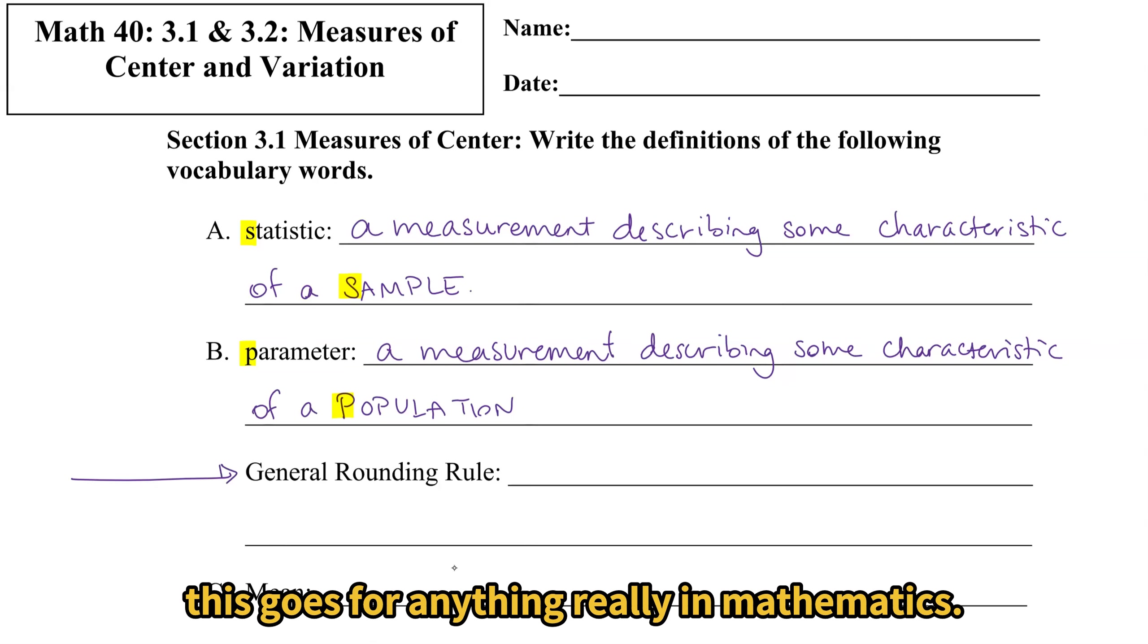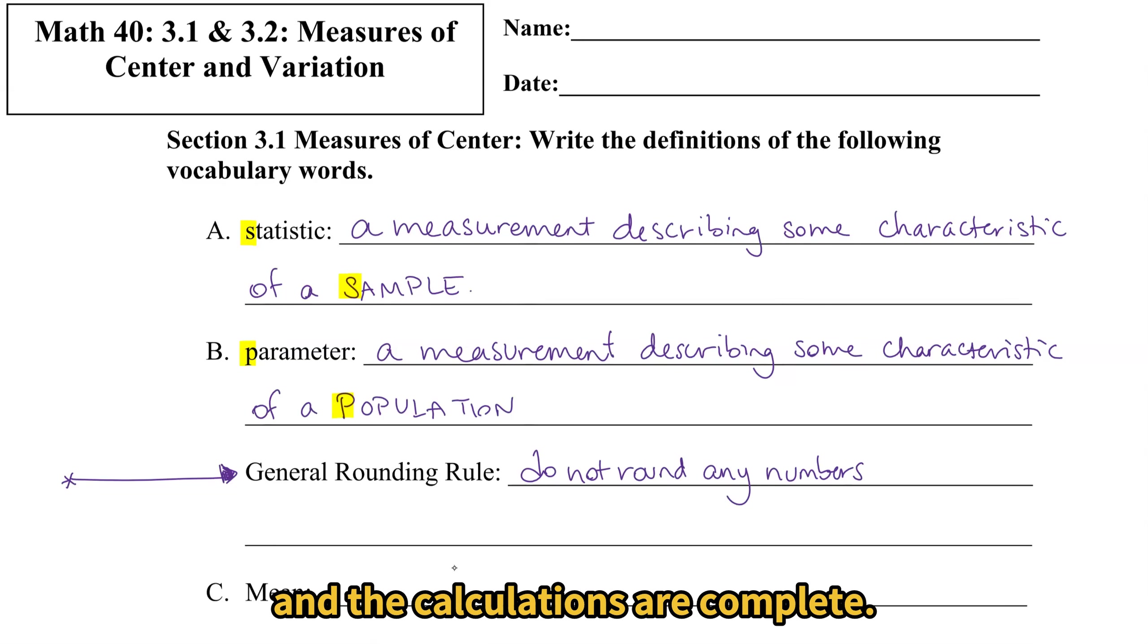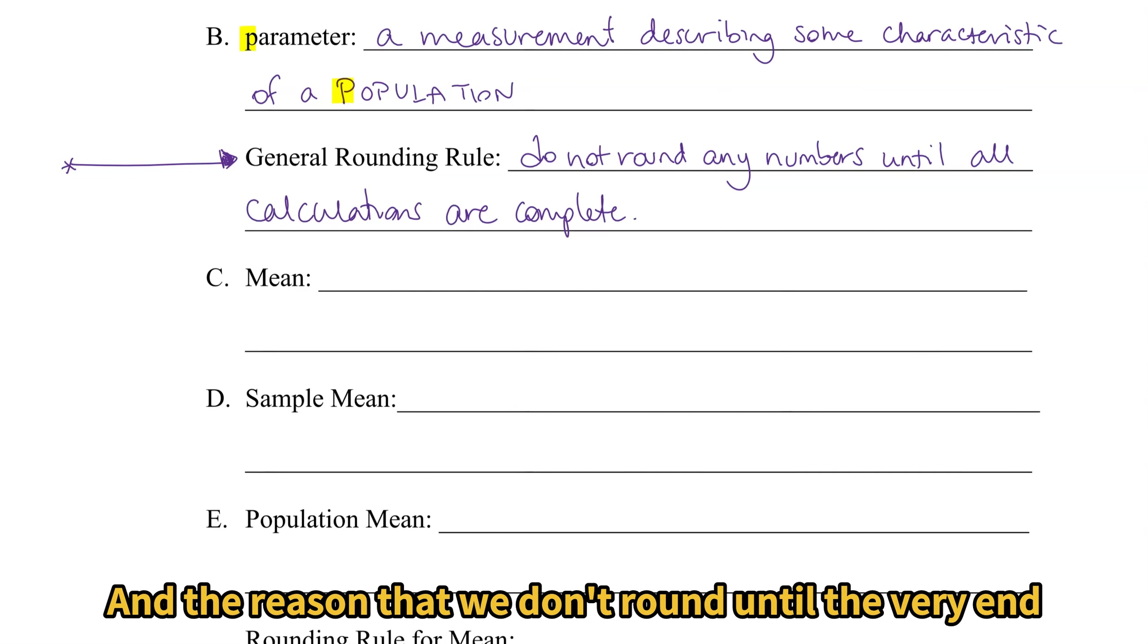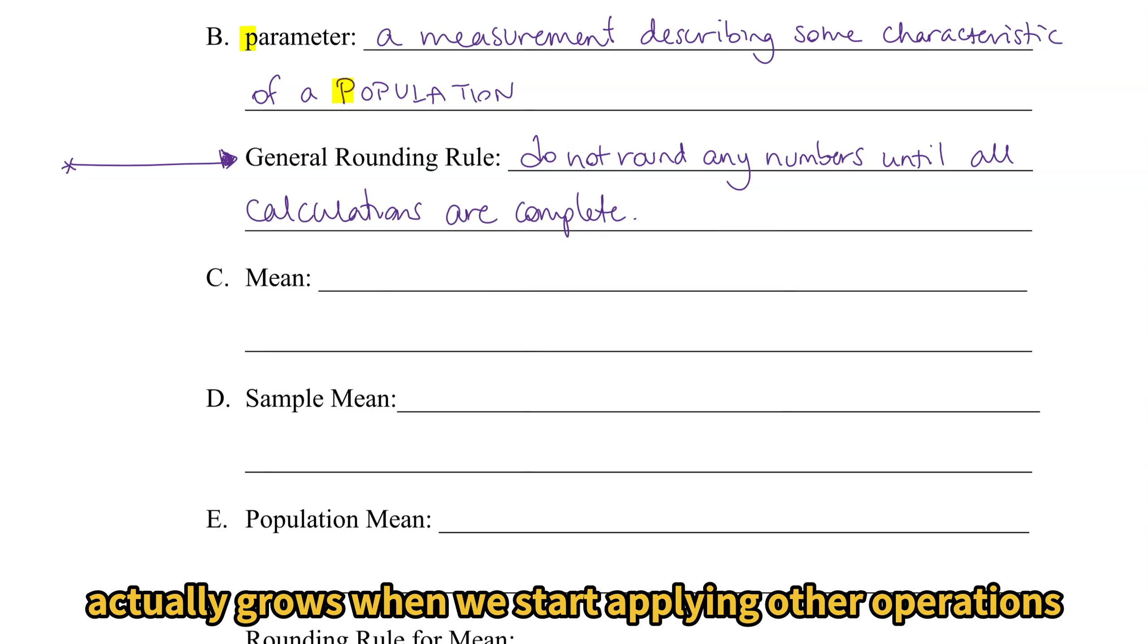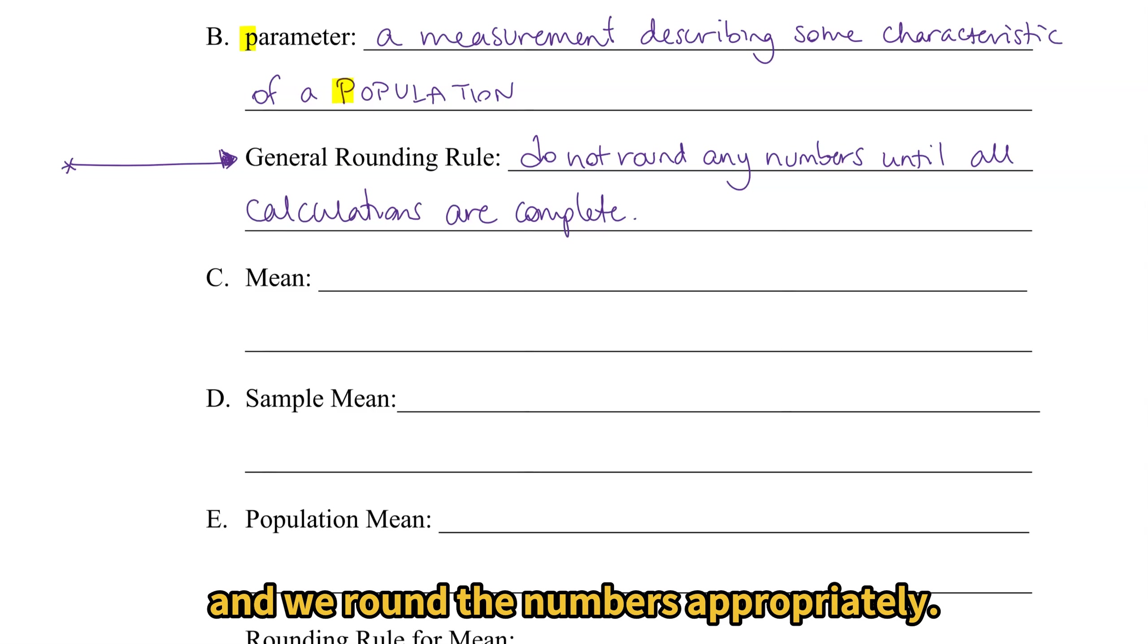The general rounding rule, this goes for anything really in mathematics. We do not round any numbers until the very end and the calculations are complete. And the reason that we don't round until the very end is because if we round in the middle, the difference between the true answer and the rounded answer actually grows when we start applying other operations after the rounding. So don't round the numbers. Use all of the digits of the numbers until the very end. And then when the calculation is done, then we look at the rounding and we round the numbers appropriately.